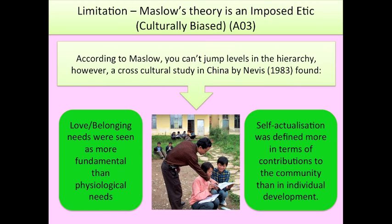A limitation of the humanistic approach is that Maslow's theory is considered an imposed etic — so it's culturally biased. According to Maslow, you can't jump levels in the hierarchy; however, a cross-cultural study in China by Nevis (1983) found that love and belonging needs were seen as more fundamental than physiological needs in China, and self-actualisation was defined more in terms of contributions to the community than in individual development.